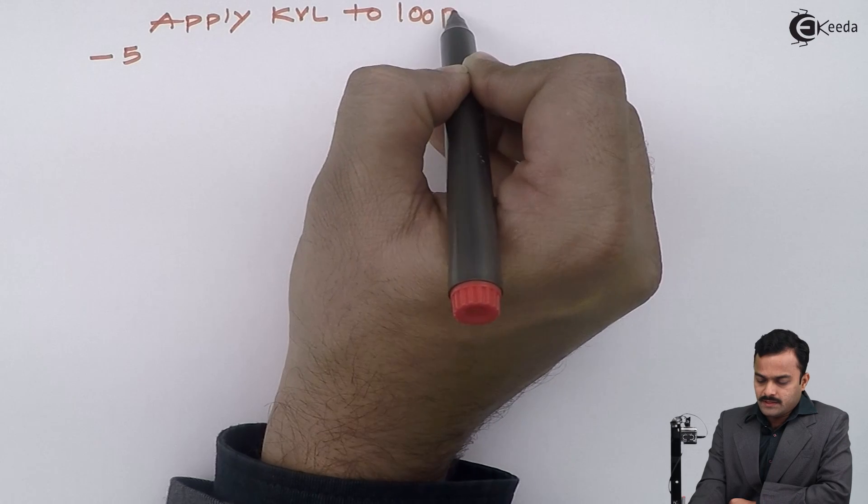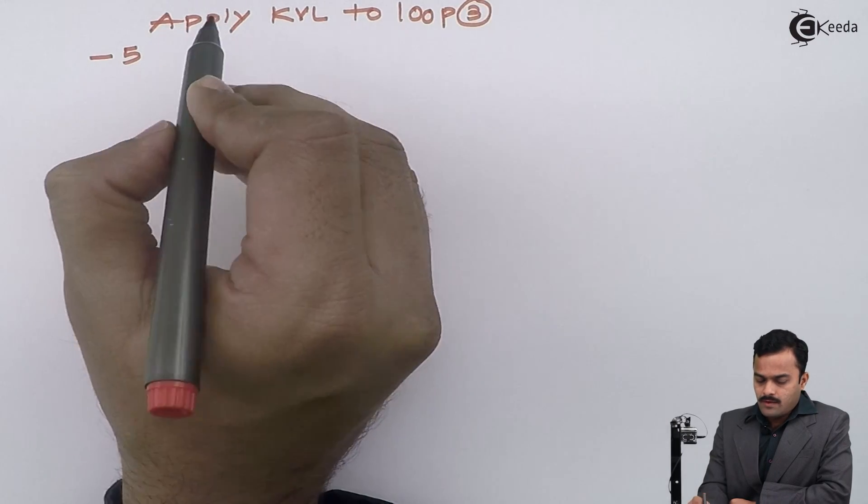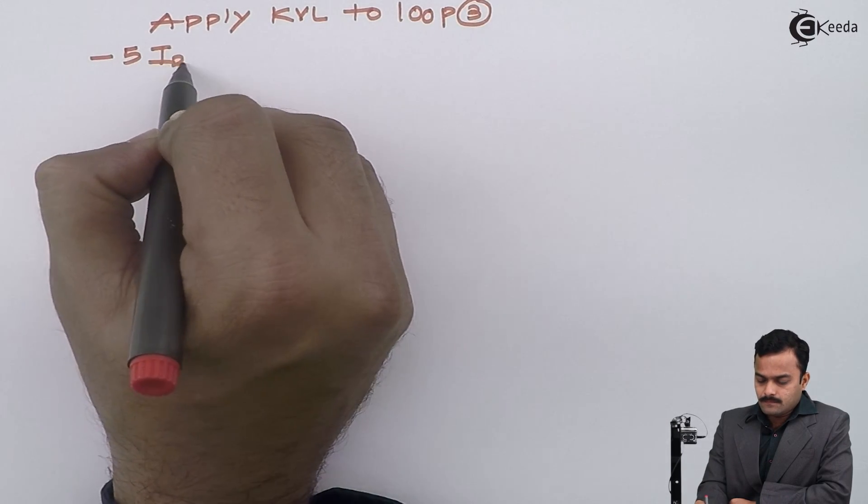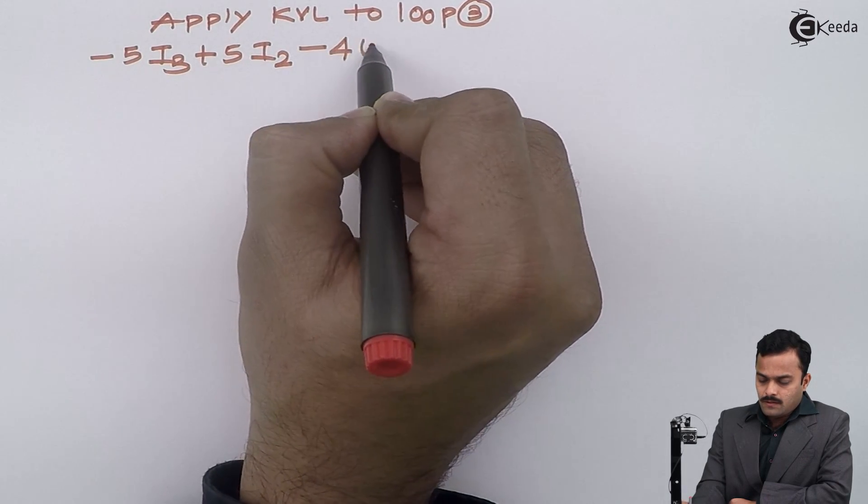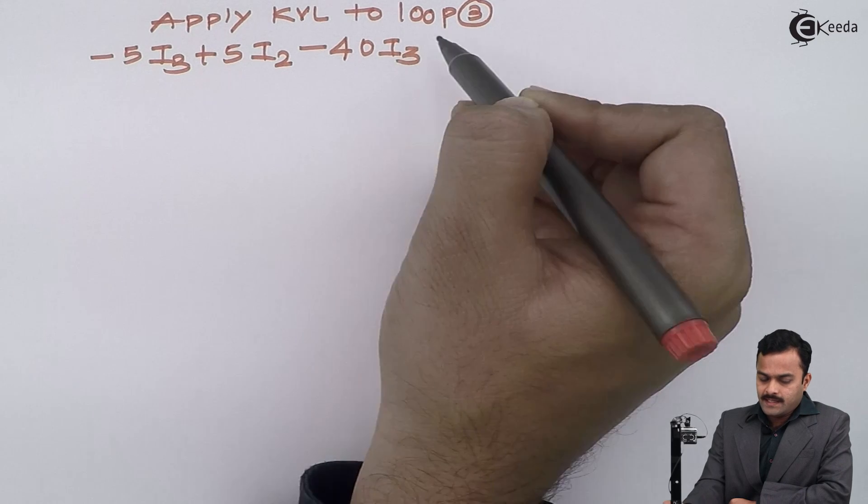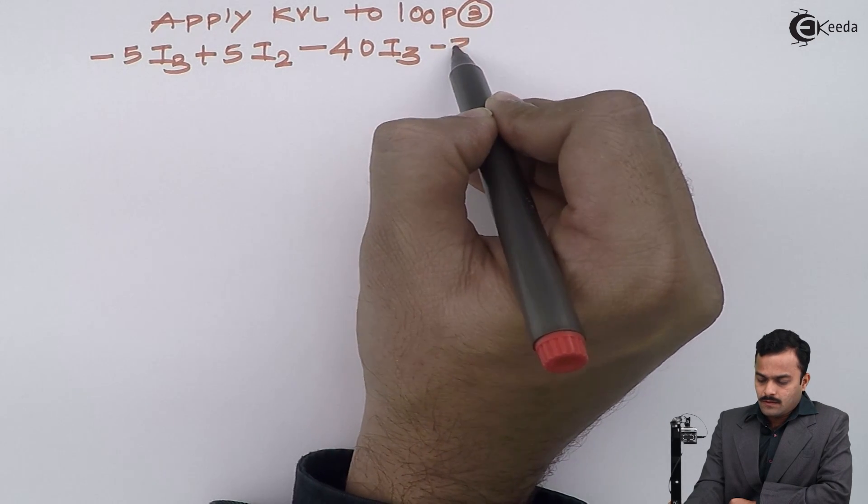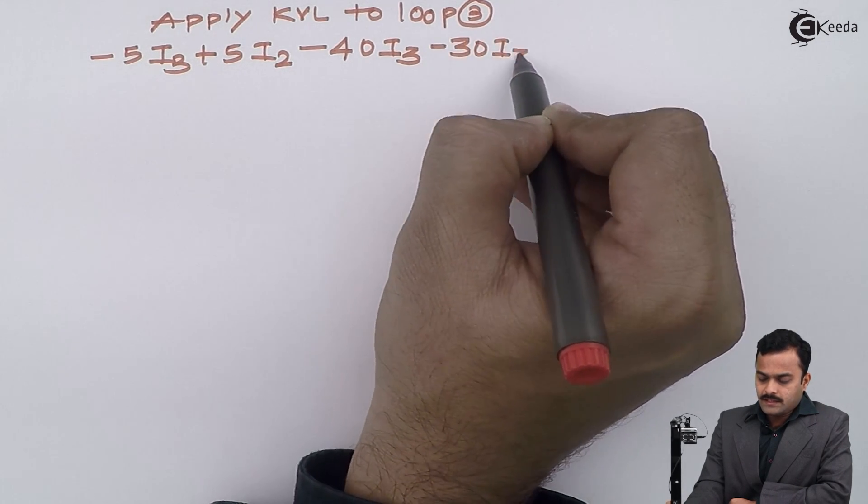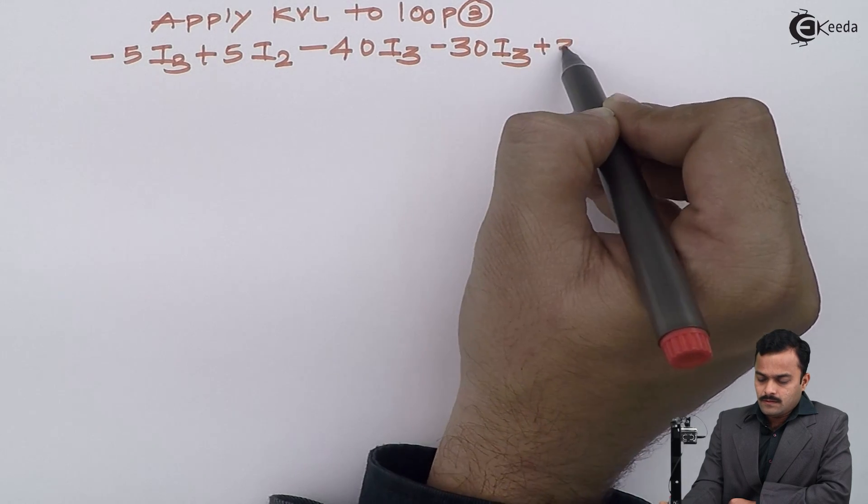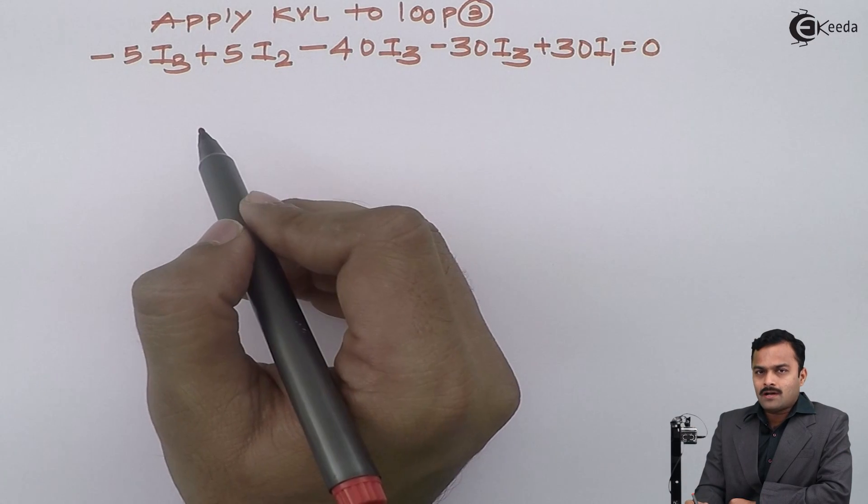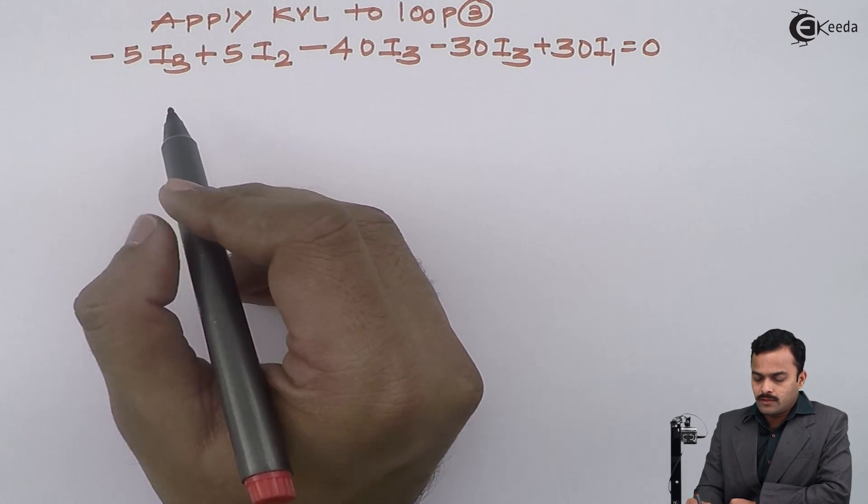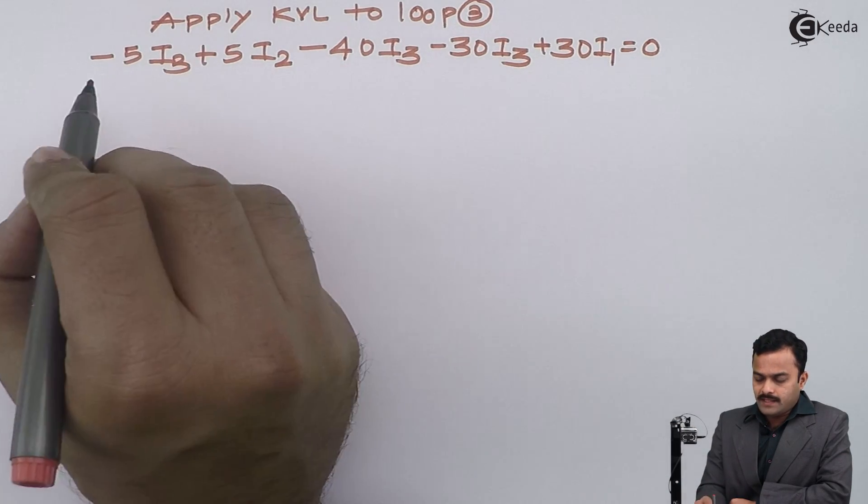Apply KVL to loop number 3. I will have minus 5I3 plus 5I2 minus 40I3 minus 30I3 plus 30I1 equal to 0. I am not having any voltage source in this particular loop.